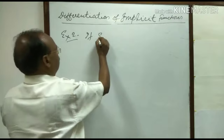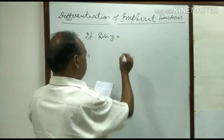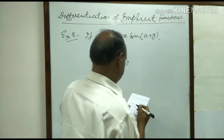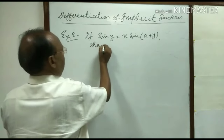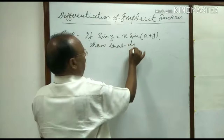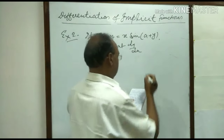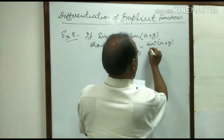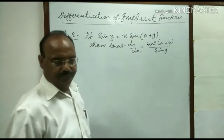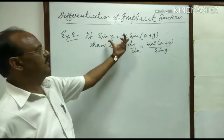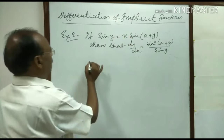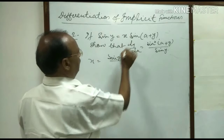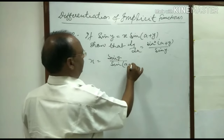If sin y is equal to x sin(a plus y), then show that derivative of y with respect to x is equal to sin squared(a plus y) upon sin a. From this given expression we can write x is equal to sin y upon sin(a plus y).